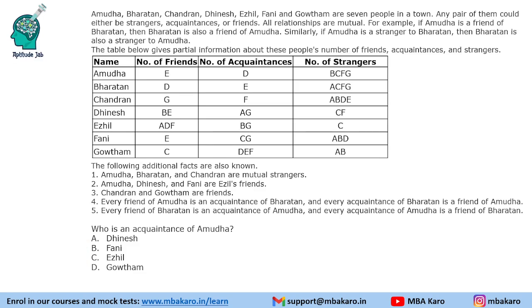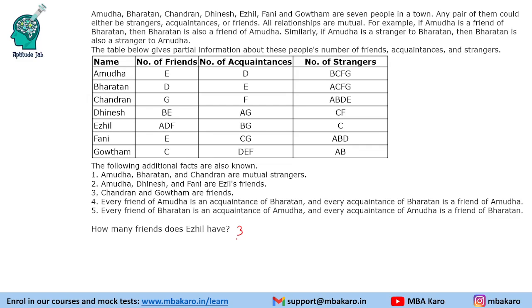Who is an acquaintance of Amudha? Amudha has Dinesh as an acquaintance. Who is an acquaintance of Chandran? Chandran has Fani as his acquaintance. How many friends does Ezil have? Ezil has three friends. How many people are either a friend or a friend of a friend for Ezil? A, D, F are friends. Now checking friends of friends: A has friend E — same person. D has friends B and E, so B is a friend of a friend of Ezil. F has friend E — same person. So the four people who are either a friend or a friend of a friend for Ezil are A, D, F, and B.